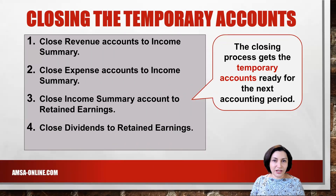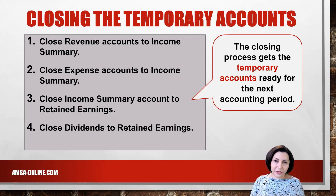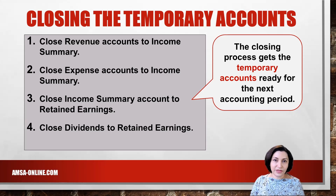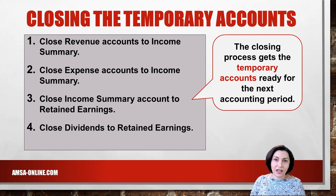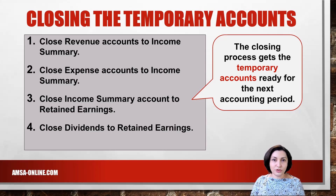The closing of a company's books is a four-step process. Step one is to close all revenue accounts to a temporary account called income summary. Step two is to close all expense accounts to the income summary account. At this point, net income is isolated in the income summary. Step three is to close income summary to retained earnings. The fourth and final step is to close dividends to retained earnings. The goal is to close all temporary accounts so we can start keeping track of revenue and expenses for the new accounting period.